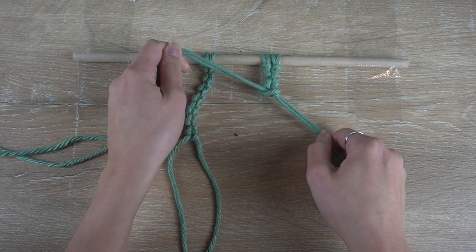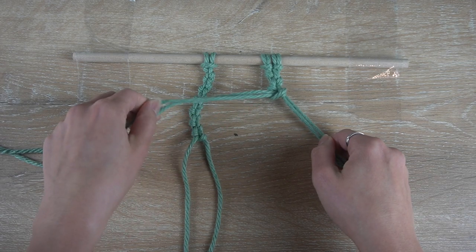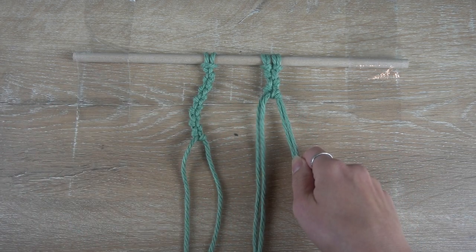After alternating several half hitch knots, you'll get a thicker version of an alternating half hitch knot chain.